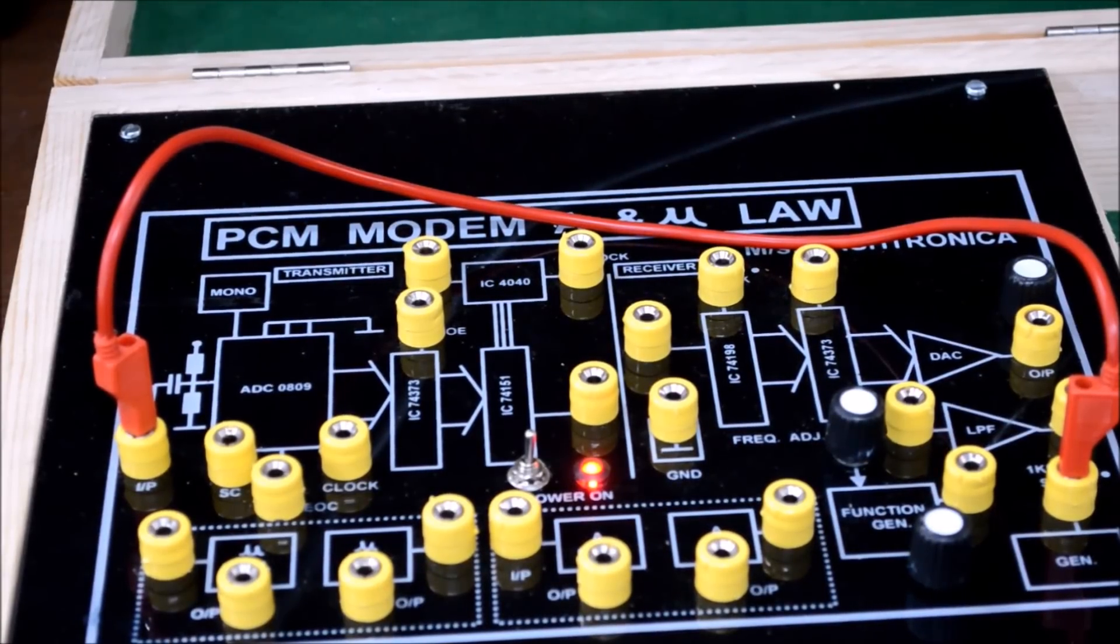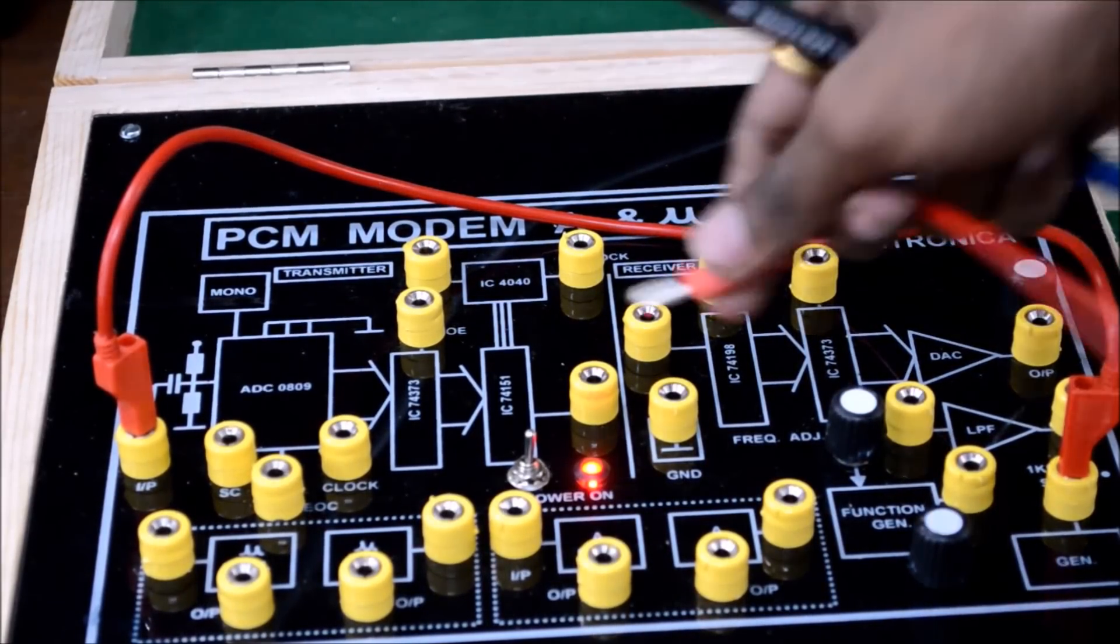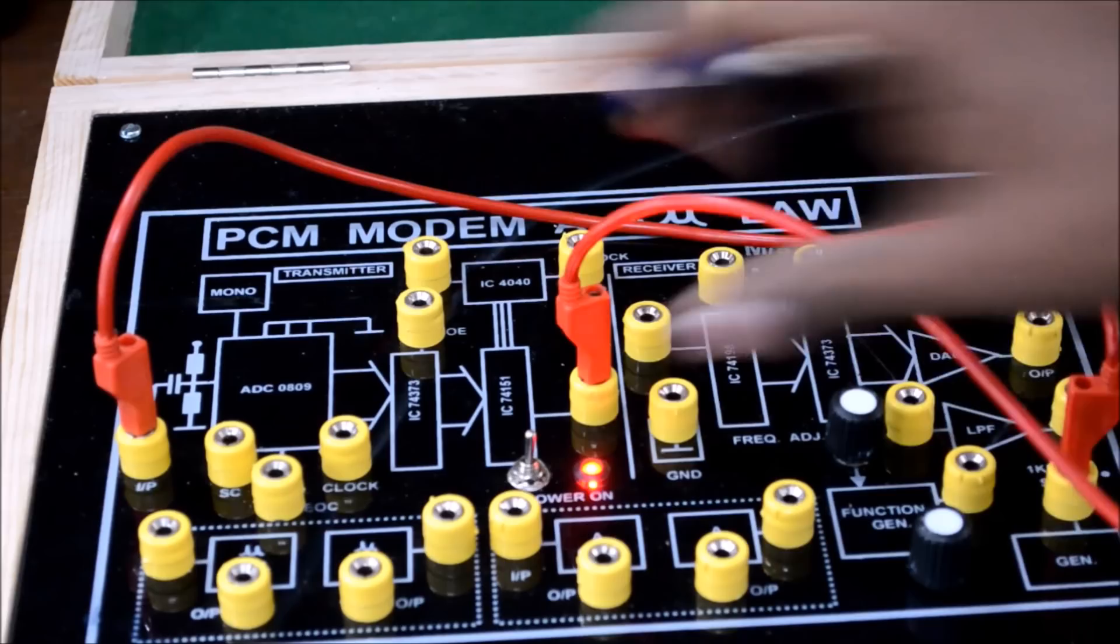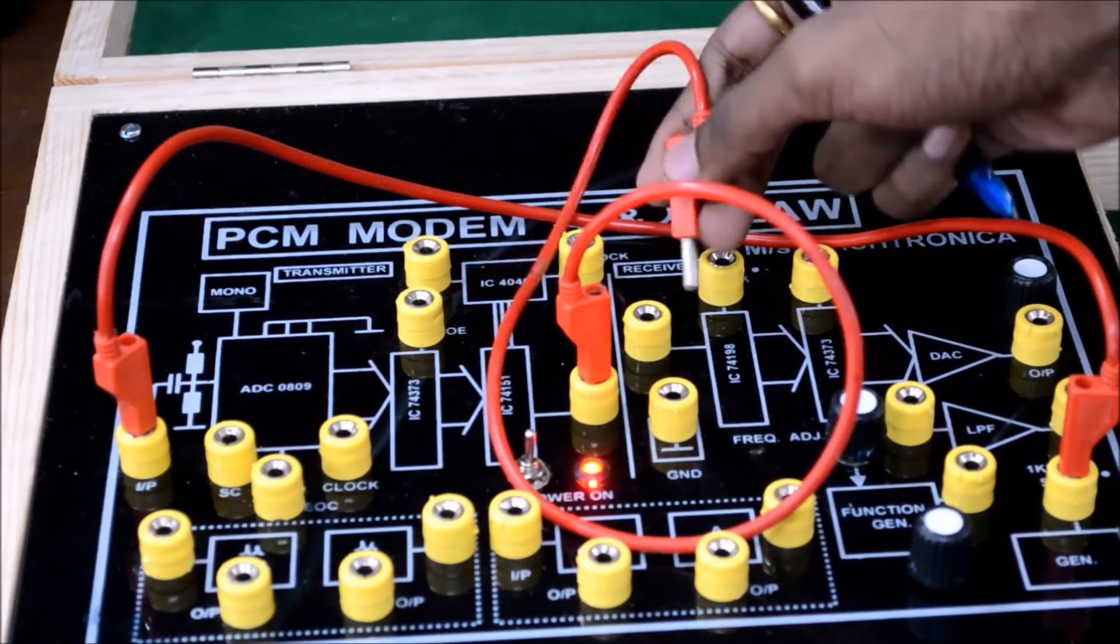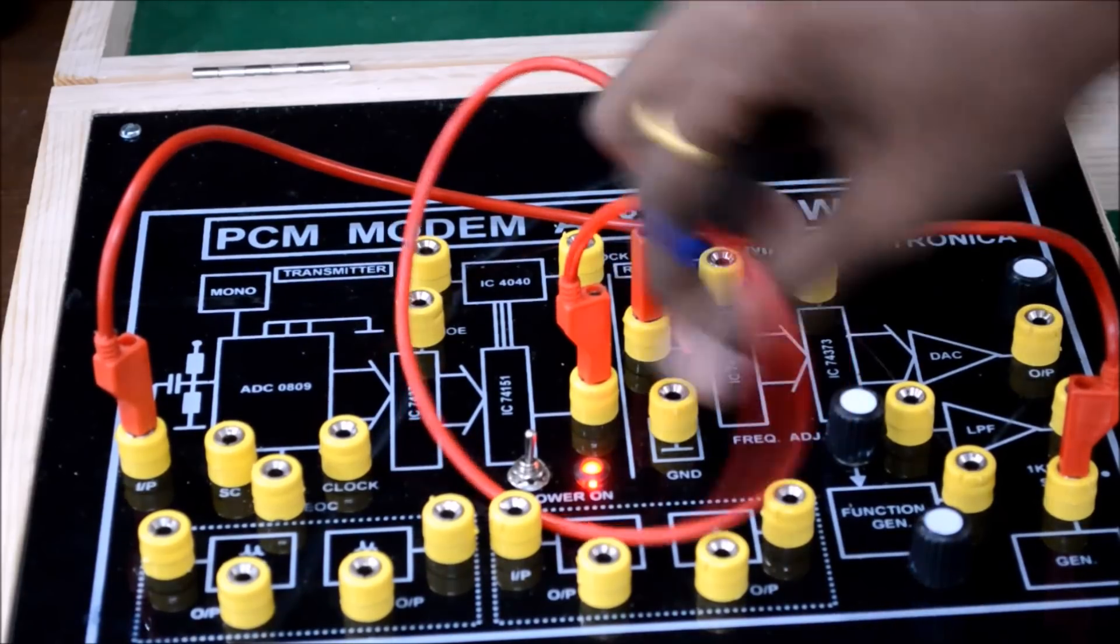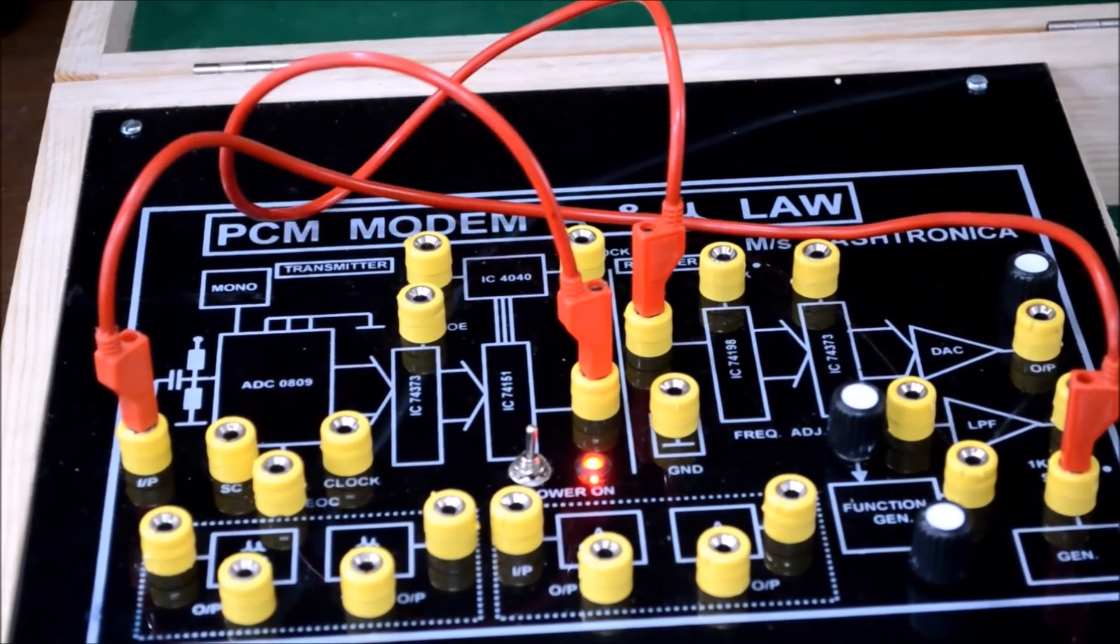After observing the waveforms, you need to connect the TX of PCM which is this port to the RX of PCM kit which is this port. After establishing this connection, connect the DAC output to the low pass filter.